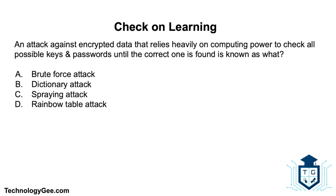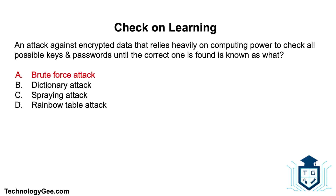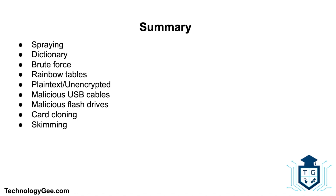Next question: an attack against encrypted data that relies heavily on computing power to check all possible keys and passwords until the correct one is found — what is this known as? Is it a brute force attack, a dictionary attack, a spraying attack, or a rainbow table attack? The correct answer is a brute force attack.